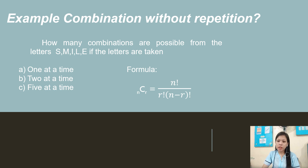Example — combination without repetition: How many combinations are possible from the letters in SMILE if the letters are taken one at a time, two at a time, and five at a time? So we have here the formula: C(n, r) = n factorial over r factorial times n minus r factorial.